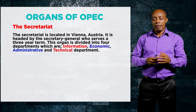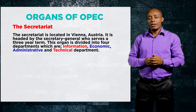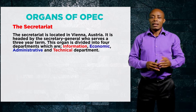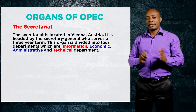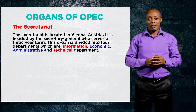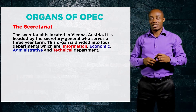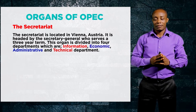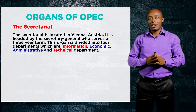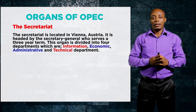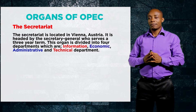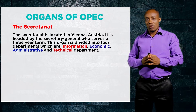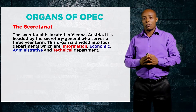The Secretariat of OPEC is located in Vienna, Austria, and is headed by the Secretary-General, who is appointed by the Conference and serves a three-year term. The Secretariat is further divided into four departments: the Information Department, the Economic Department, the Administrative Department, and the Technical Department. All of these organs have played an important role in the success of OPEC.